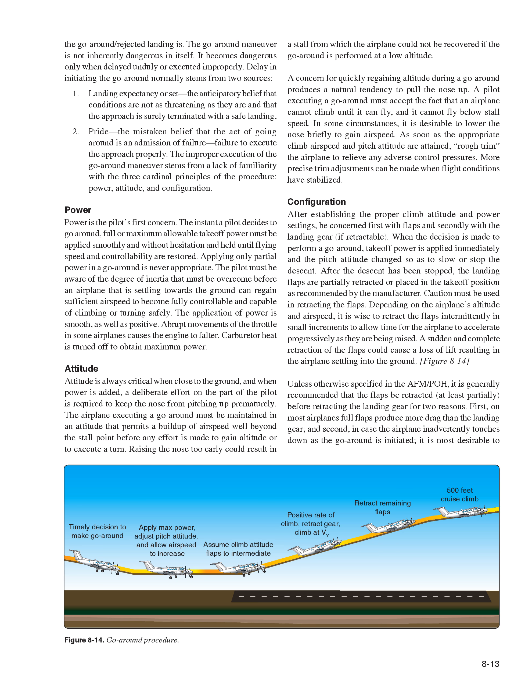Attitude is always critical when close to the ground, and when power is added, a deliberate effort is required to keep the nose from pitching up prematurely. The airplane executing a go-around must be maintained in an attitude that permits a buildup of airspeed well beyond the stall point before any effort is made to gain altitude or execute a turn. Raising the nose too early could result in a stall from which the airplane could not recover if the go-around is performed at a low altitude. A pilot executing a go-around must accept that an airplane cannot climb until it can fly, and it cannot fly below stall speed. As soon as the appropriate climb airspeed and pitch attitude are attained, rough-trim the airplane to relieve adverse control pressures.